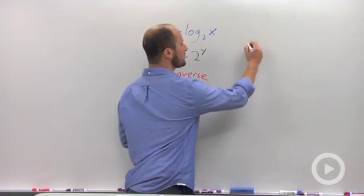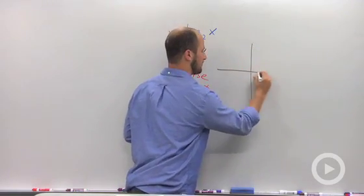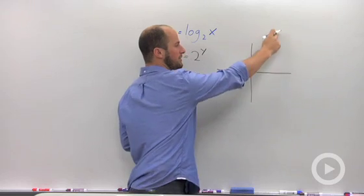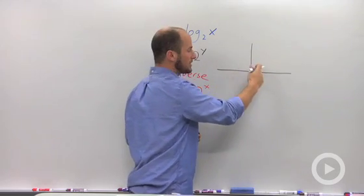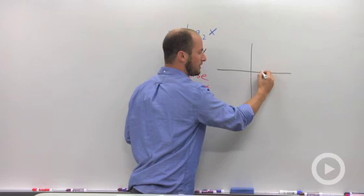So what this graph does, the exponential graph went to the point 0, 1. When we flipped the x and y's, we are now going to go to the point 1, 0.